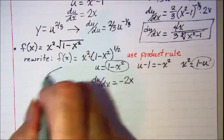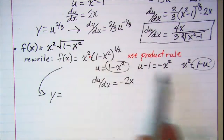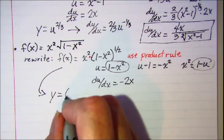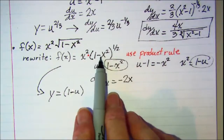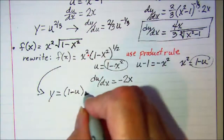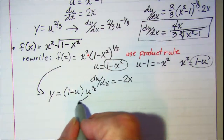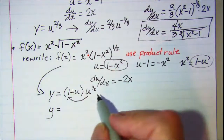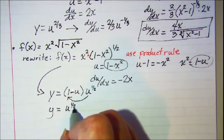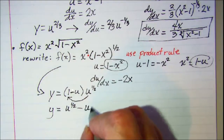We rewrite with our u's: y equals, in place of x squared we write 1 minus u, multiplied by u to the one-half. Rather than using the product rule, I'm going to distribute. So y equals u to the one-half minus u to the three-halves.